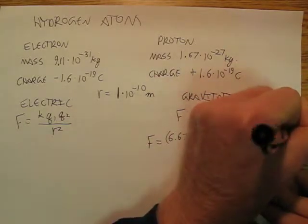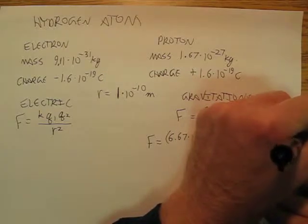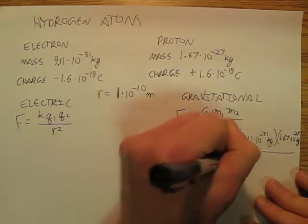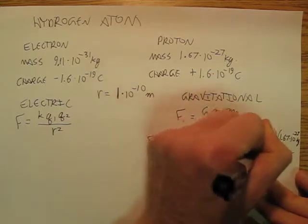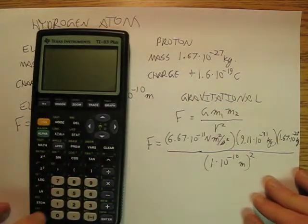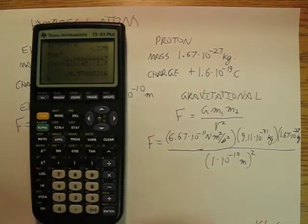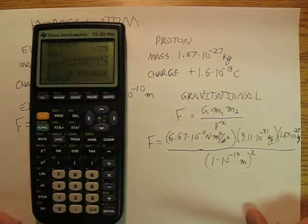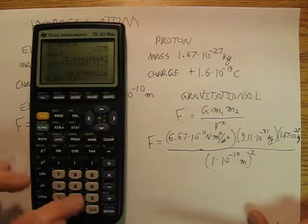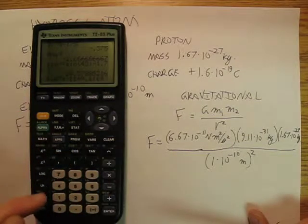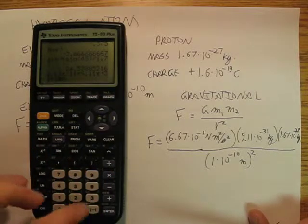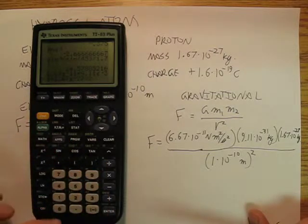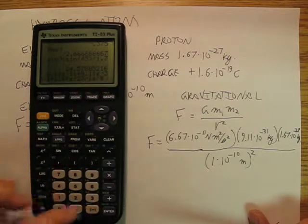Kind of running out of space over there. Remember to square the bottom. So I'm going to plug this in all as one shot on my calculator. I'm going to go 6.67 EE negative 11 times 9.11 EE negative 31 times 1.67 EE negative 27 divided by 1 EE negative 10.